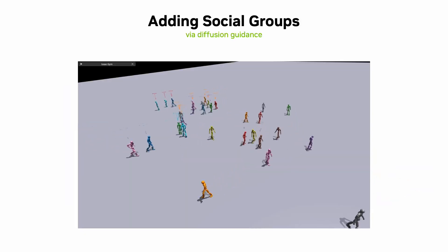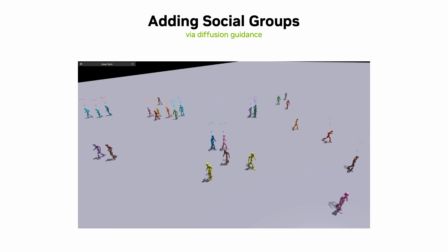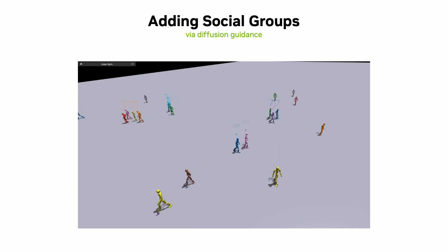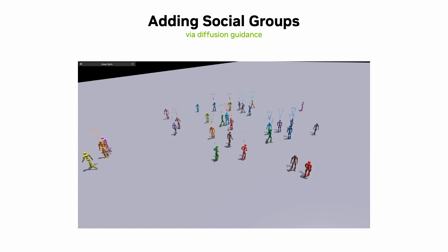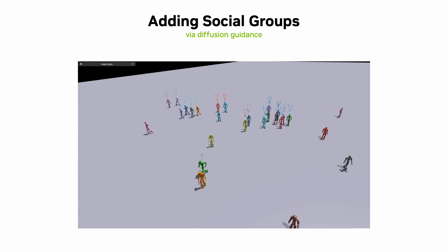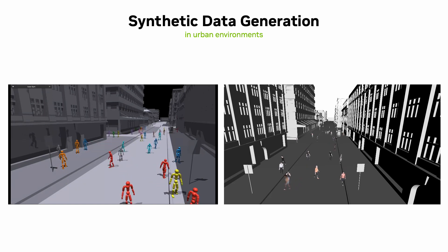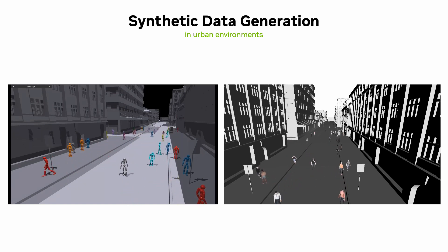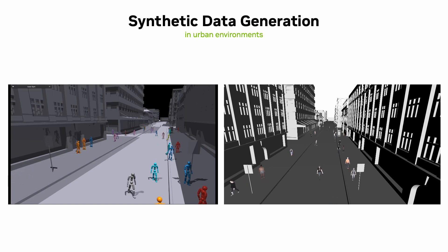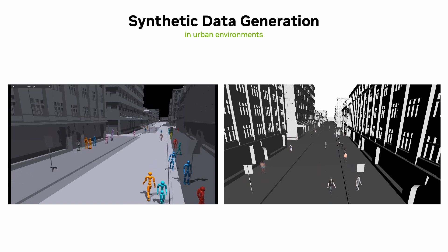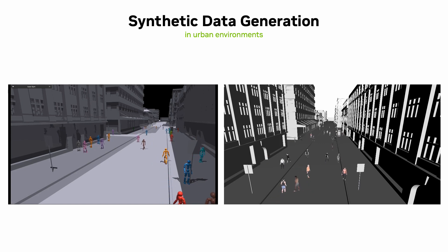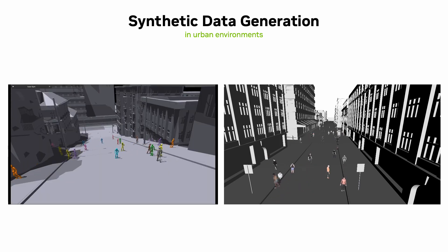Additional user controllability can be added to the crowd simulation with guidance. Groups of agents are defined as social groups that will tend to travel together. Characters with the same color arrows above their heads come together and move as a group as the simulation progresses. Since the characters are robust to many types of terrains, we can simulate pedestrians in street scenes where they successfully handle curves and slopes. Additionally, we can target the motion to textured characters which can be used to generate synthetic data in urban environments, for example for testing autonomous vehicles.